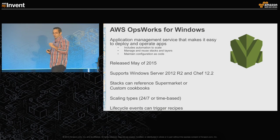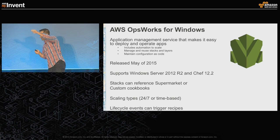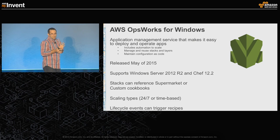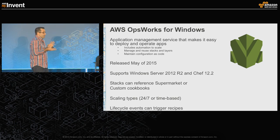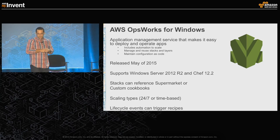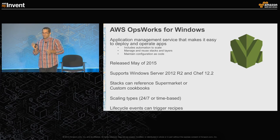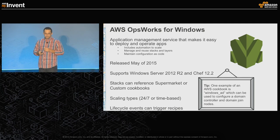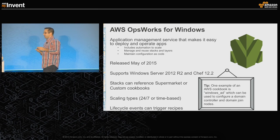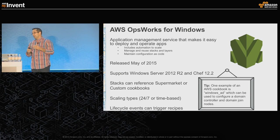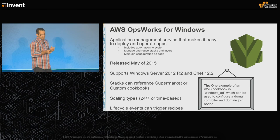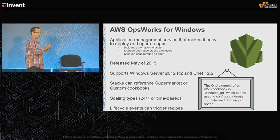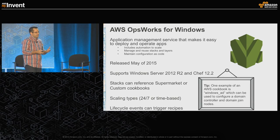Stacks can reference a supermarket or custom cookbooks — this is a Windows-specific consideration, as there are different kinds of stacks within OpsWorks. OpsWorks is our managed Chef service, and Windows is an option. An example of a popular cookbook you can grab is Windows AD. We keep coming back to this — Windows AD helps with configuring nodes, domain joining, and all the complexity that comes with it. The nut's been cracked.